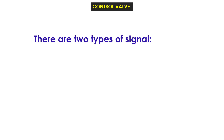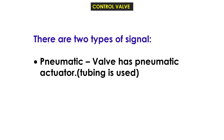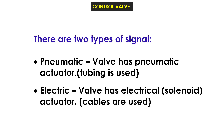There are two types of signal. A pneumatic valve has a pneumatic actuator and tubing is used. An electric valve has an electrical solenoid actuator and cables are used.